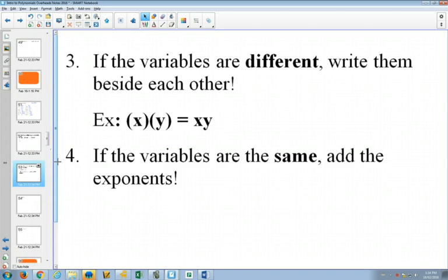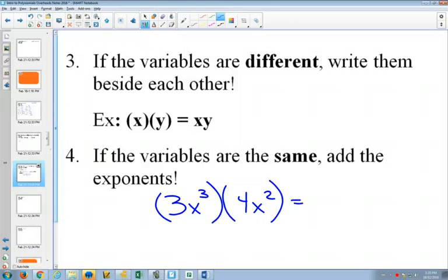So if we have variables that are different, like a and b or x and y, then we could just write them beside each other when we multiply them. And if the variables are the same, well that's our exponent laws. So if you had something like 3x cubed times 4x squared, multiplying the coefficients together would give you 3 times 4, which is 12. And x cubed times x squared, there would be 5 x's all multiplied together there, so we'd get x to the 5.